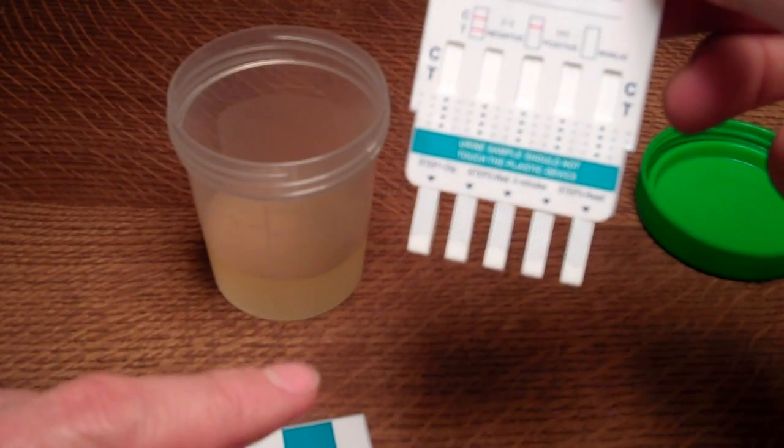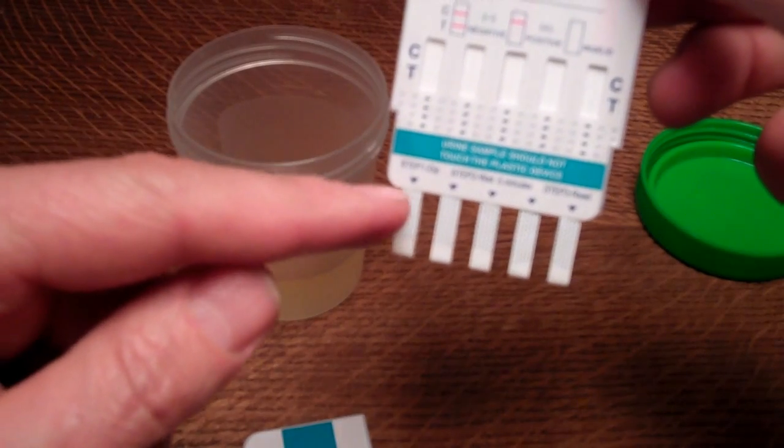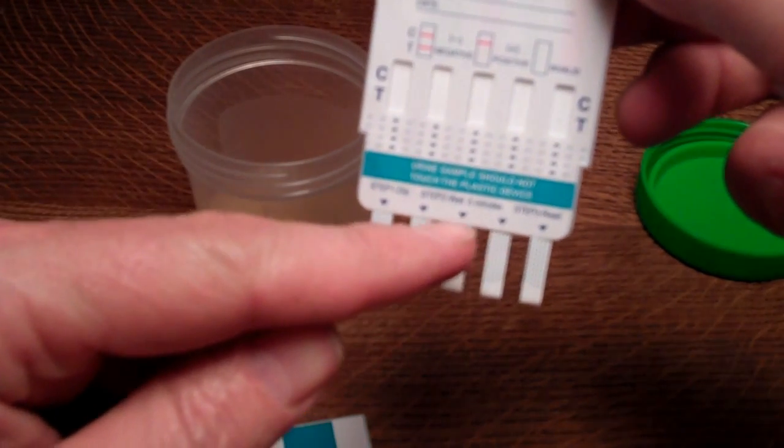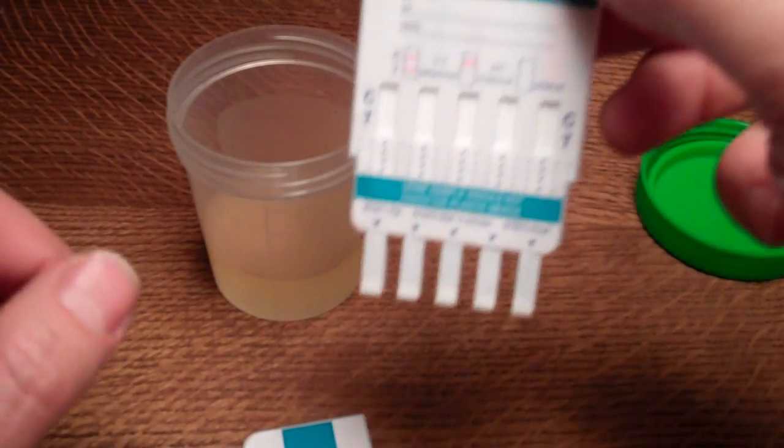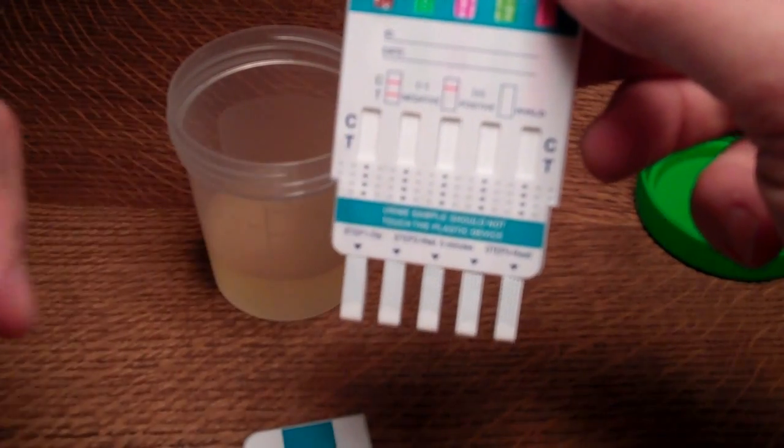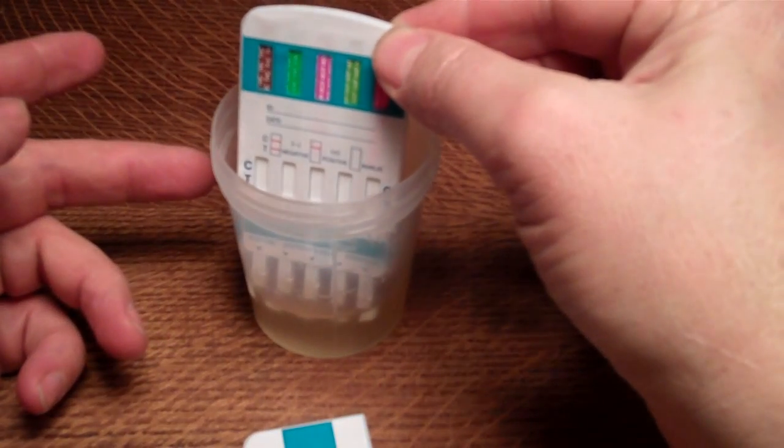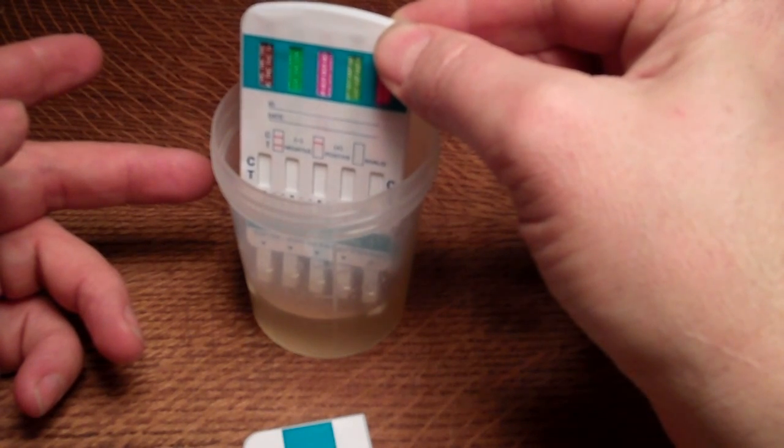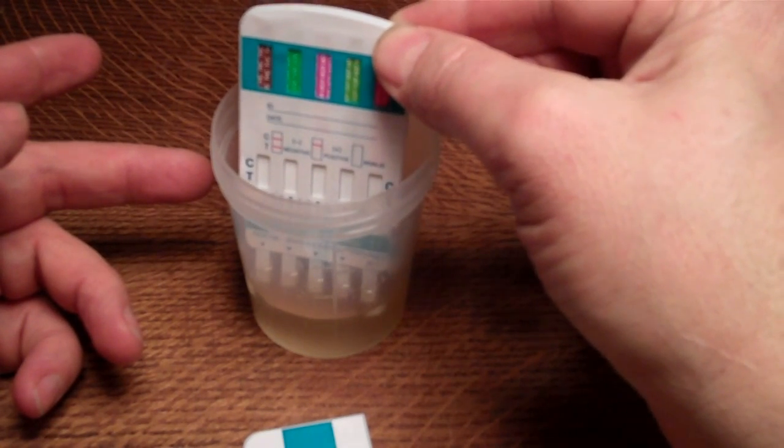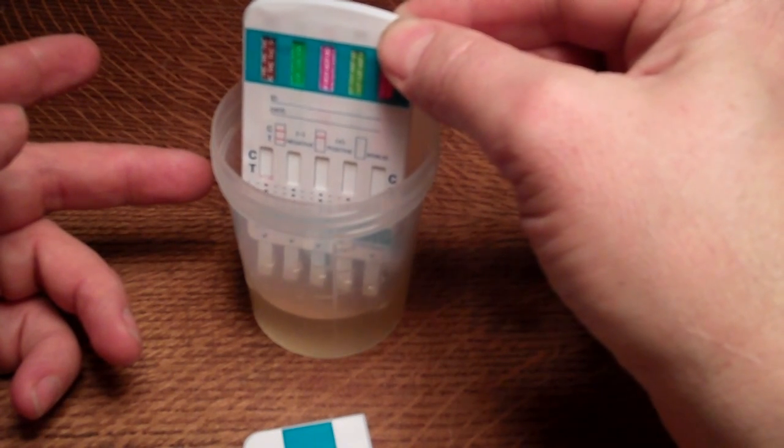The urine sample universally should not touch the test device, so the maximum dip line is indicated on this test membrane panel as that triangular indicator. You don't want to get any splash or urine contaminating the panel. You just want to dip the prongs into the urine sample about three-quarters of their height, and you're dipping it in for between five and ten seconds.